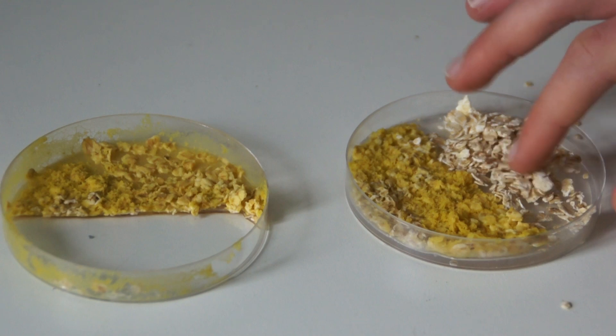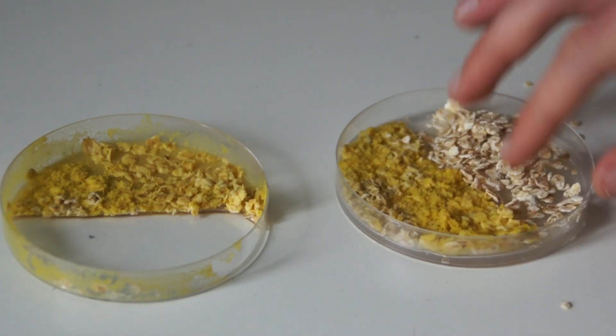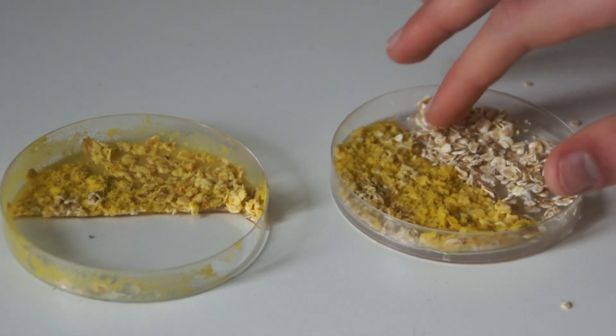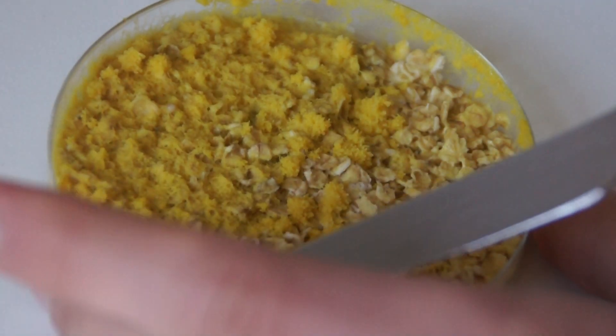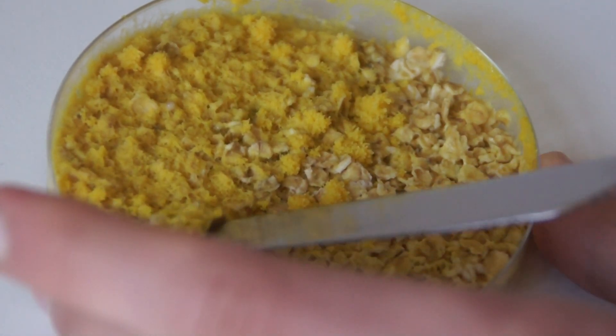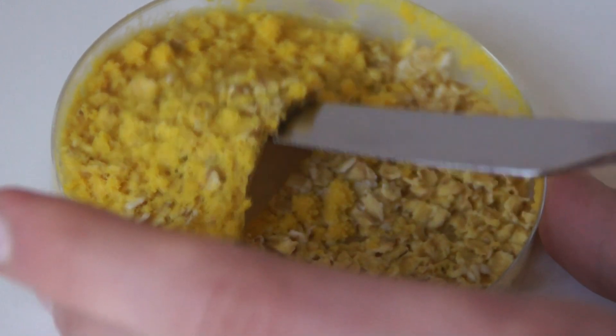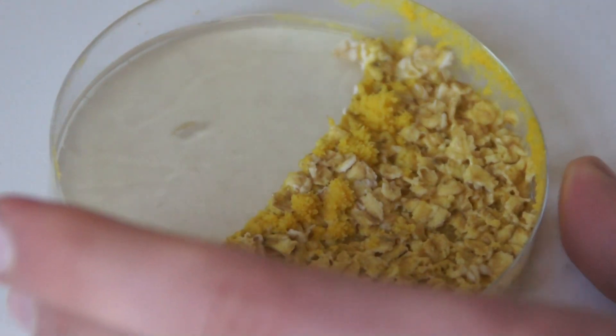Cover the other half with oat flakes. 24 hours later, the blob should have doubled its size. Remove the top part using a spatula or knife.